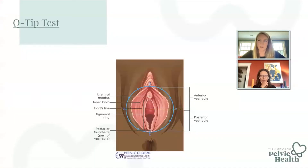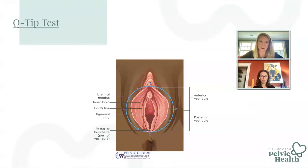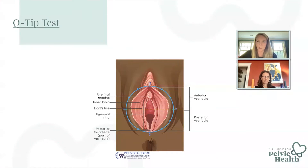When you're doing the Q-tip test, you want to make sure that you're doing it a few times, because often the patient may say something's tender just because they feel like that's the right thing to say. So you want to make sure you get an accurate read. Start with the Q-tip up at 12 o'clock and then gently work your way down, making sure that you're right on that vestibular tissue.